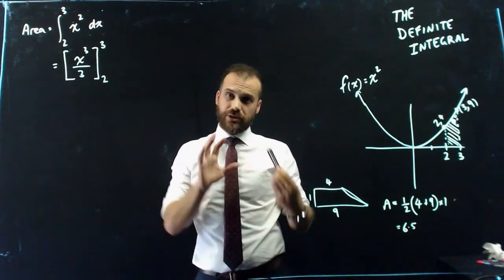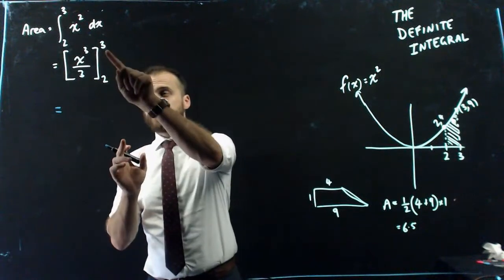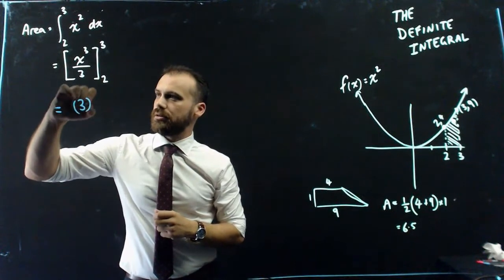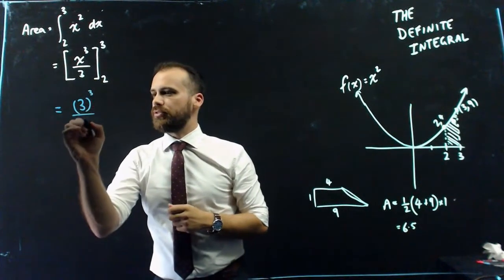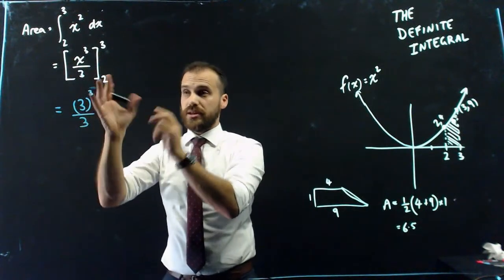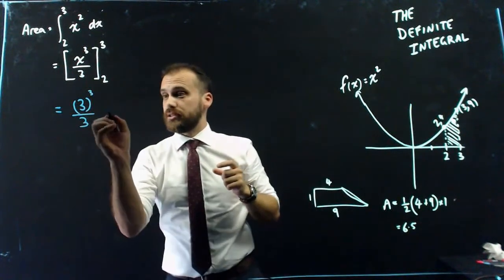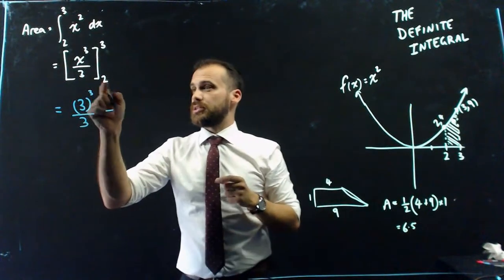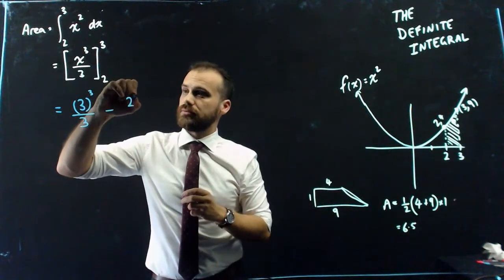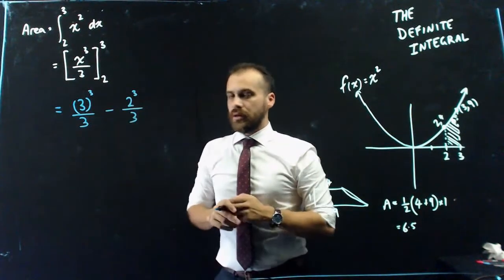Now, this next bit can confuse some people, so make sure you follow along. So we're going to take 3 and sub it in for x. So 3 cubed over 3. So what I'm doing is taking 3 and subbing it into everything in that big set of square brackets. And then I'm going to subtract and I'm going to sub 2 in to everything in that big set of square brackets. That's it.